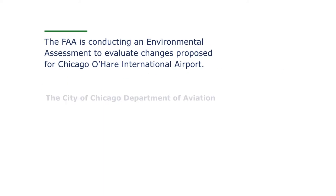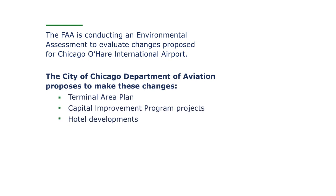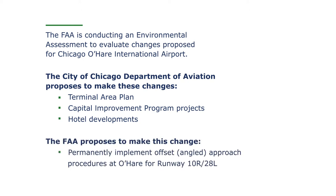The changes involve the terminal area, numerous capital improvement projects, and hotel development. In addition, the FAA is proposing to permanently implement offset approach procedures at O'Hare for runway 10 right, 28 left — in other words, these are slightly angled flight approaches.